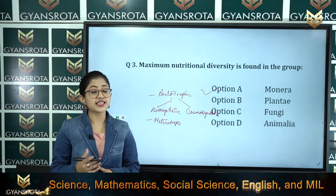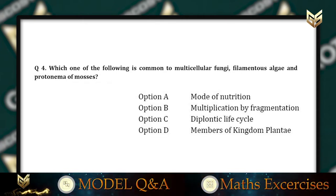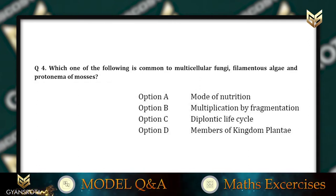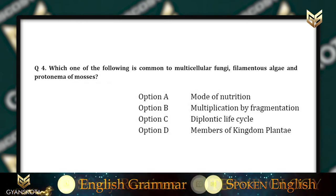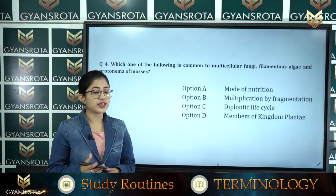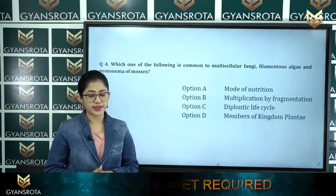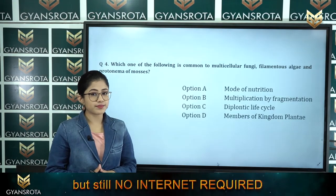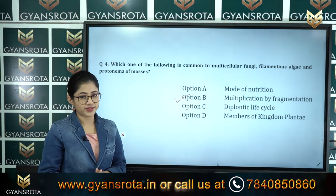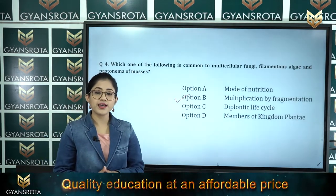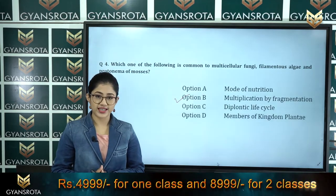Question number 4: Which one of the following is common to multicellular fungi, filamentous algae, and protonema of mosses? Option A mode of nutrition, option B multiplication by fragmentation, option C diplontic life cycle, option D members of kingdom Plantae. The correct answer is option B — multiplication by fragmentation. This is common to multicellular fungi, filamentous algae, and protonema of mosses.